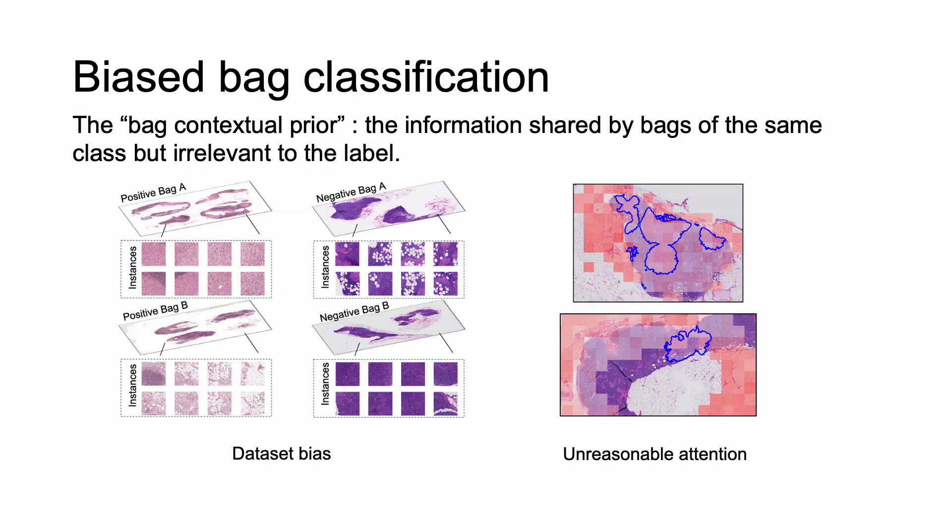While we have witnessed these great efforts, they still suffer from the problem of biased bag-classification. Here are two evidences. The first is the dataset bias. For example, if most of the instances in the positive bags are stained pink, but in negative bags, instances are stained purple, the co-occurrence of specific color patterns and labels may mislead the model. Instead of learning the relations of instances, the model may think the more pink instances a bag contains, the more likely it is a positive bag.